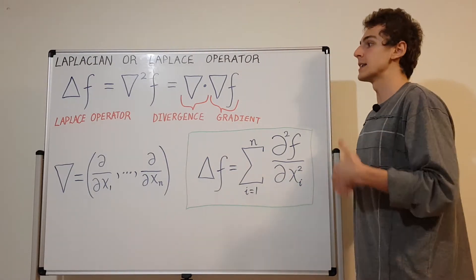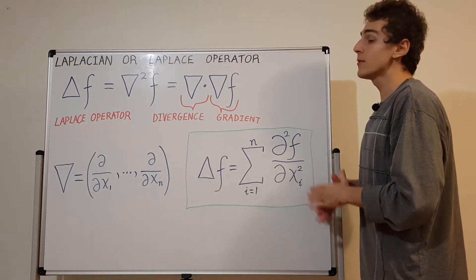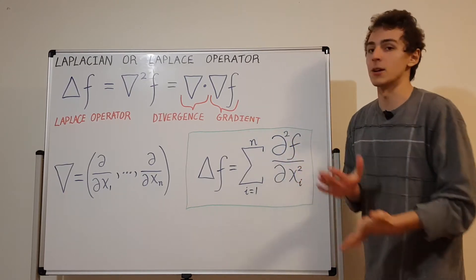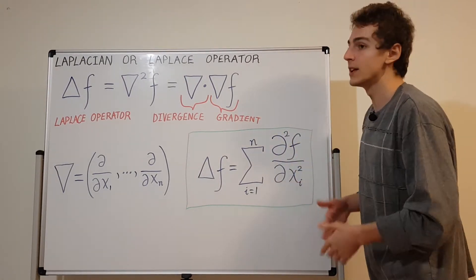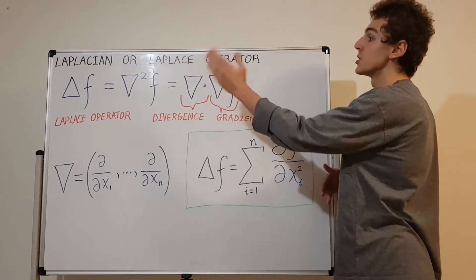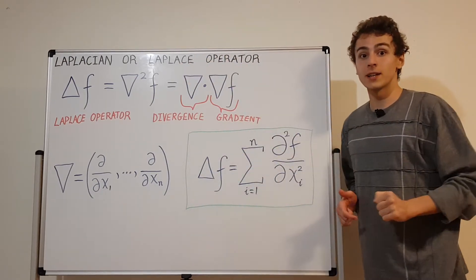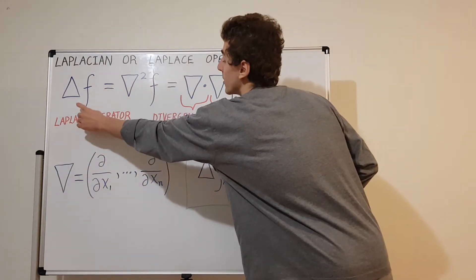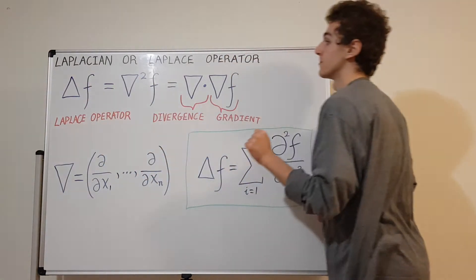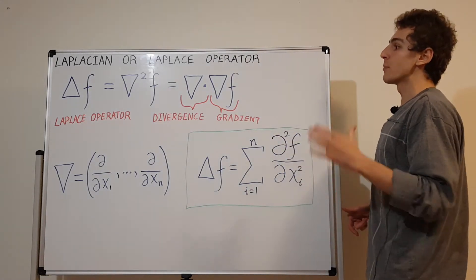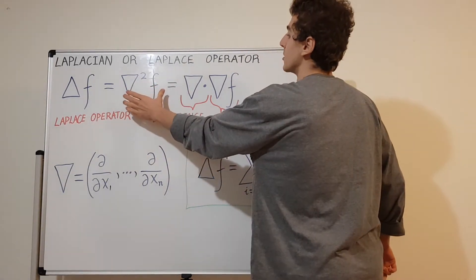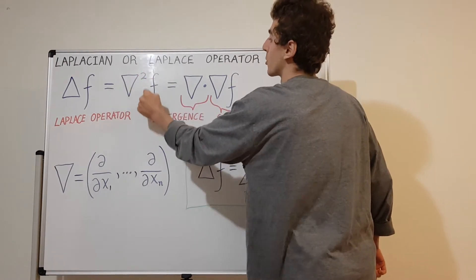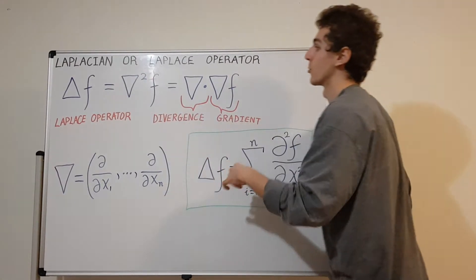In single-variable or multivariable calculus, you'll encounter delta X, delta Y, delta V for change in velocity — delta F meaning change in F. But in this context, it does not mean change in F; it means the Laplace operator acting on F.